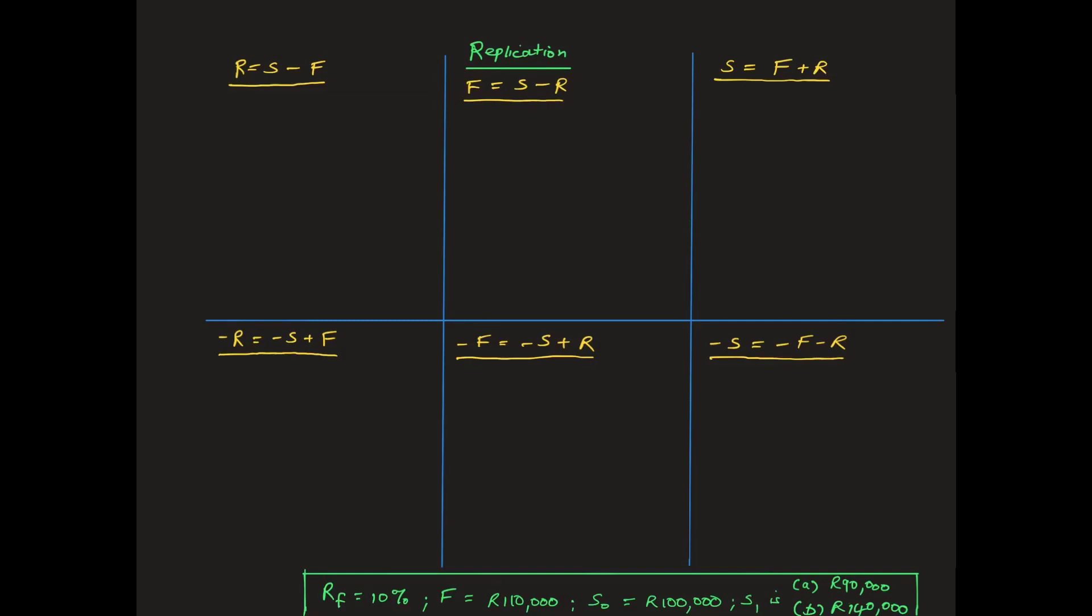All examples use the same starting and ending circumstances shown at the bottom of the screen. The risk-free rate is 10%, the forward price is R110,000, and the spot price at T0 is R100,000. After one year at T1, there are two independent situations: either the spot price is R90,000 as in case A, or it is R140,000 as in case B.